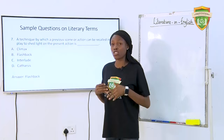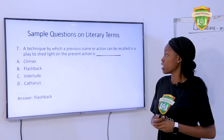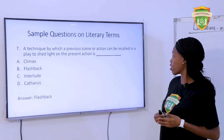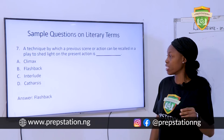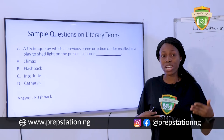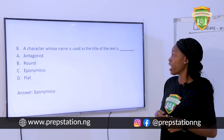Now let's look at sample questions on other literary terms. A technique by which a previous scene or action can be recalled in a play to shed light on the present action is — A. Climax. B. Flashback. C. Interlude. D. Catharsis. The answer is flashback. When a writer sheds light on something that happened in the past and brings it to the present context, that is a flashback.